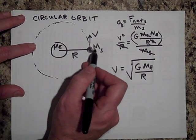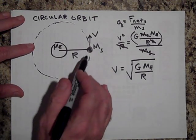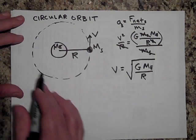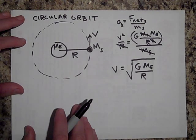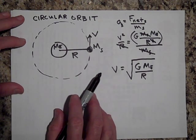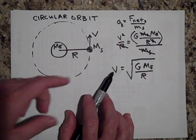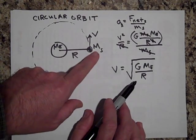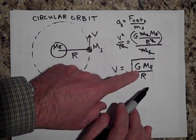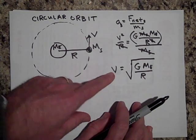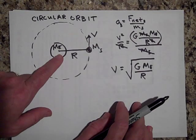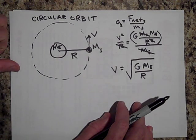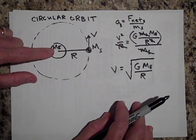What would happen if you doubled the mass of the satellite — what would happen to the velocity necessary to maintain the circular orbit? Go ahead and pause. It turns out that doubling the satellite mass does nothing to the required speed. It's the exact same speed, because the formula only contains the mass of the Earth — the body being orbited.